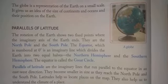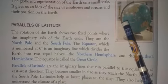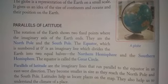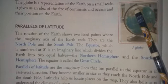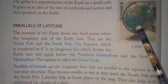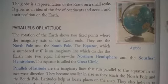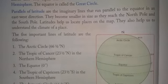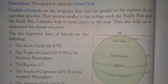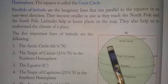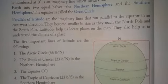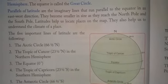The Earth rotates around this axis. The equator is an imaginary line which divides the Earth into two equal halves — the Northern Hemisphere and the Southern Hemisphere. The equator is also called the great circle. Parallels of latitude are the imaginary lines which run parallel to the equator in an east-west direction.